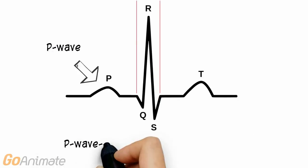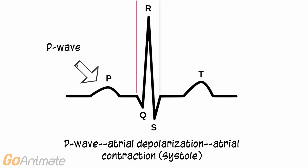The first bump is called the P wave. The P wave represents atrial depolarization. Depolarization occurs during contraction, or systole.